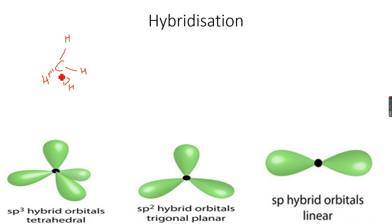And since all of these are single bonds, they are called sigma bonds. All single bonds are sigma bonds.